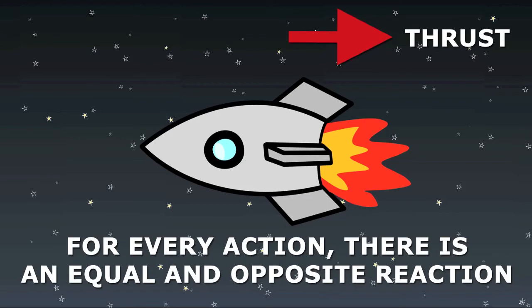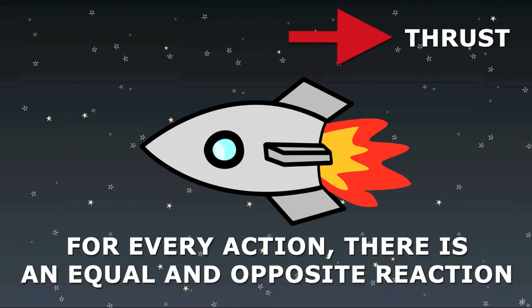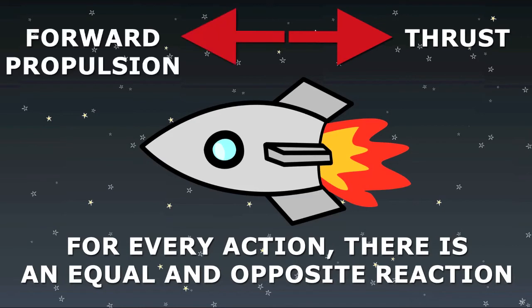Newton's Third Law states that for every action, there is an equal and opposite reaction. In this case, the thrust backward is countered by the equal and opposite movement of the rocket going forward. So, a rocket is a perfect example of Newton's Third Law.